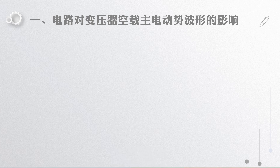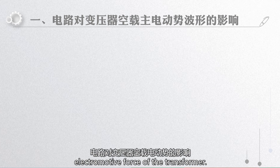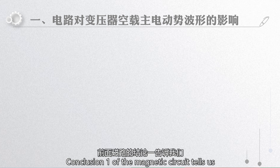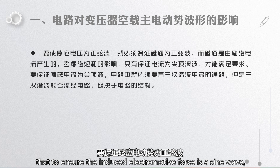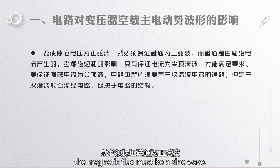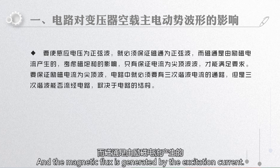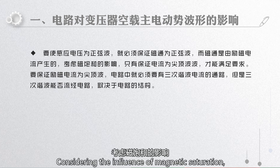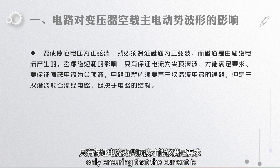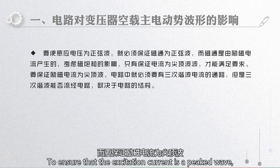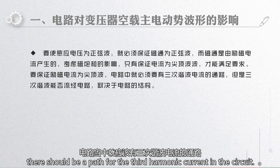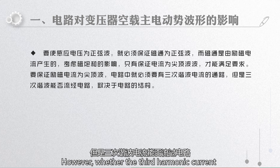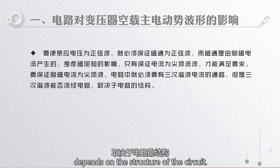First, let's discuss the influence of the circuit on the no-load electromotive force of the transformer. Conclusion 1 of the magnetic circuit tells us that to ensure the induced electromotive force is a sine wave, the magnetic flux must be a sine wave, and the magnetic flux is generated by the excitation current. Considering the influence of magnetic saturation, only ensuring that the current is a peaked wave can meet the requirement. To ensure the excitation current is a peaked wave, there should be a path for the third harmonic current in the circuit. Whether the third harmonic current can flow through the circuit depends on the structure of the circuit.